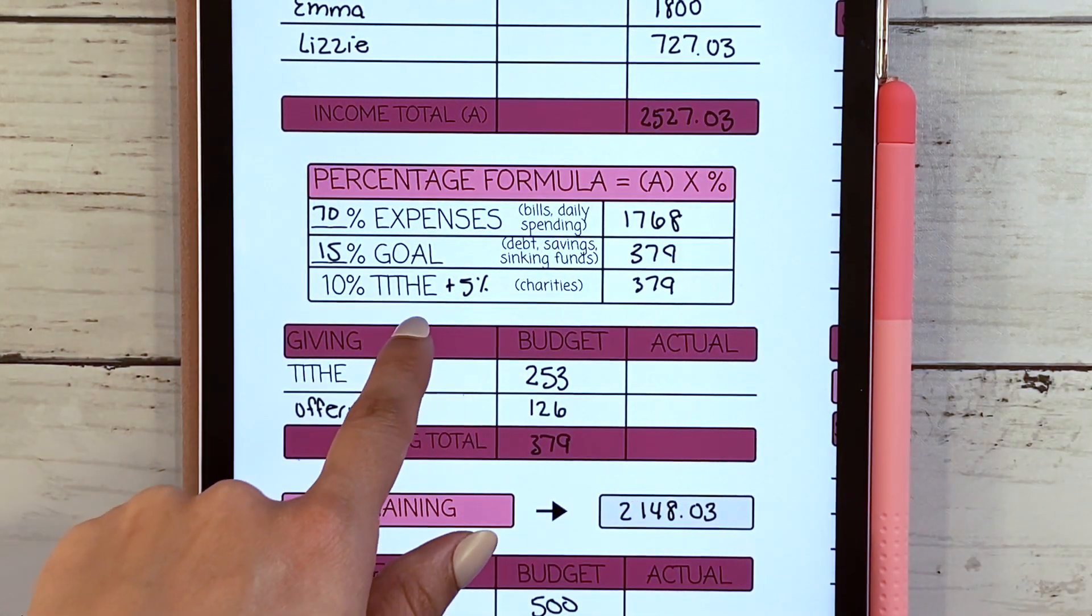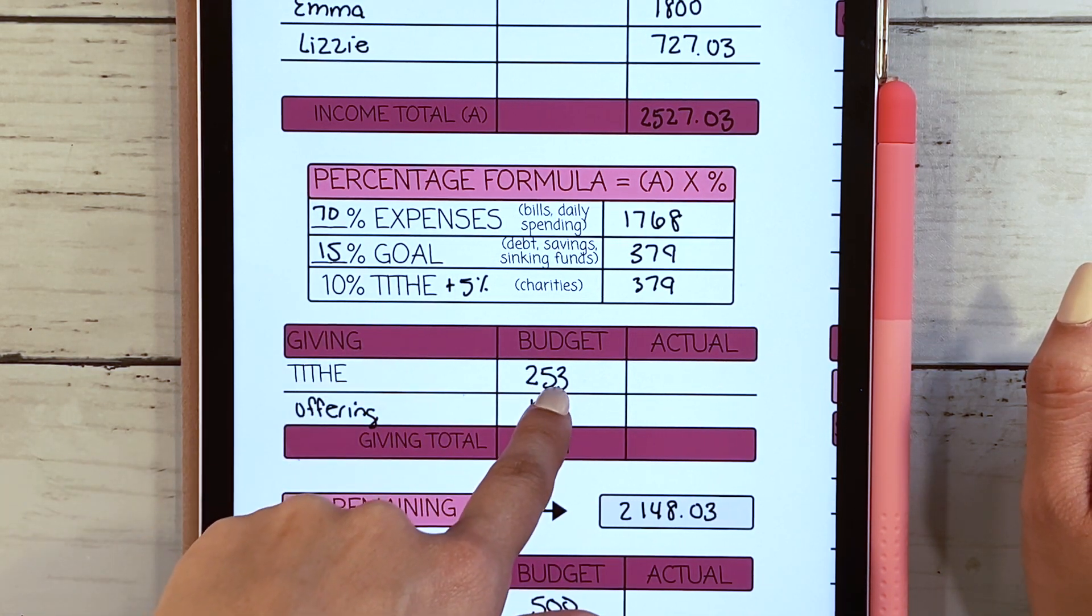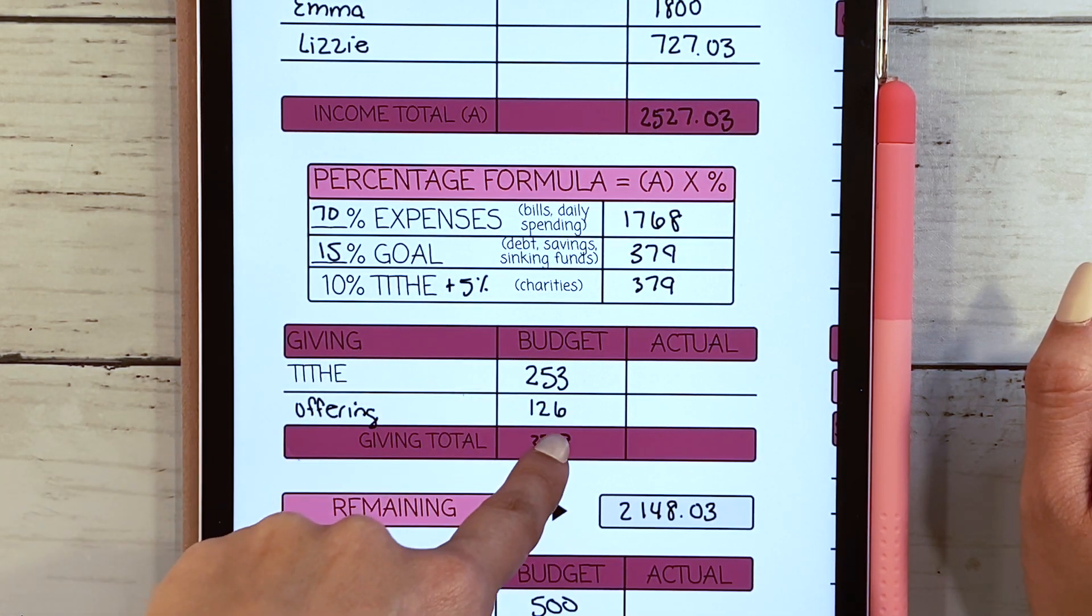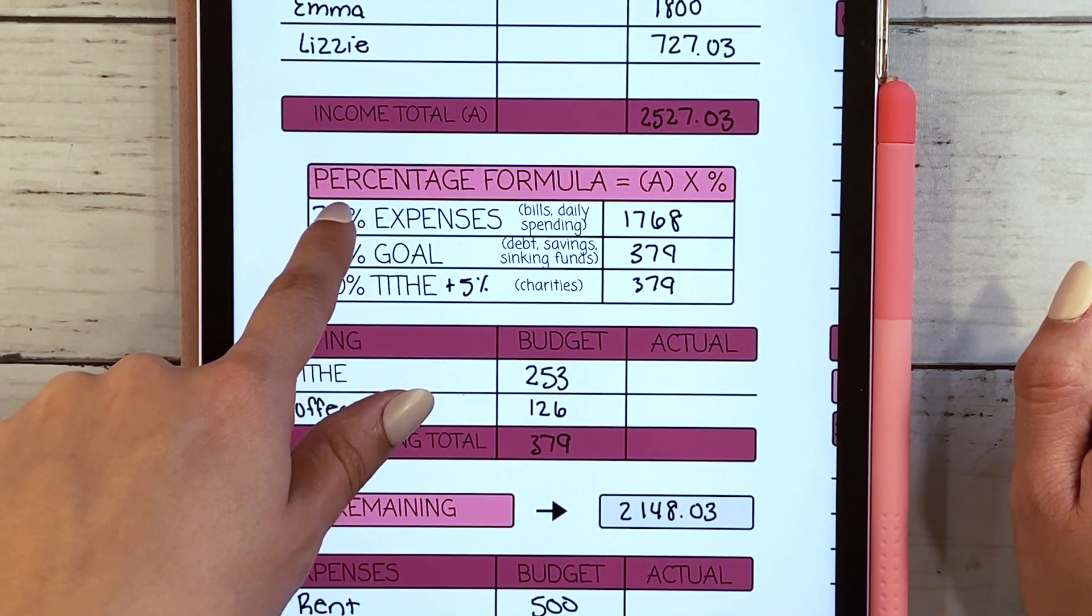We took 10% and applied it to our tithe and we did an additional 5% and broke it down to offering. These ones we do set aside by specific percentages.